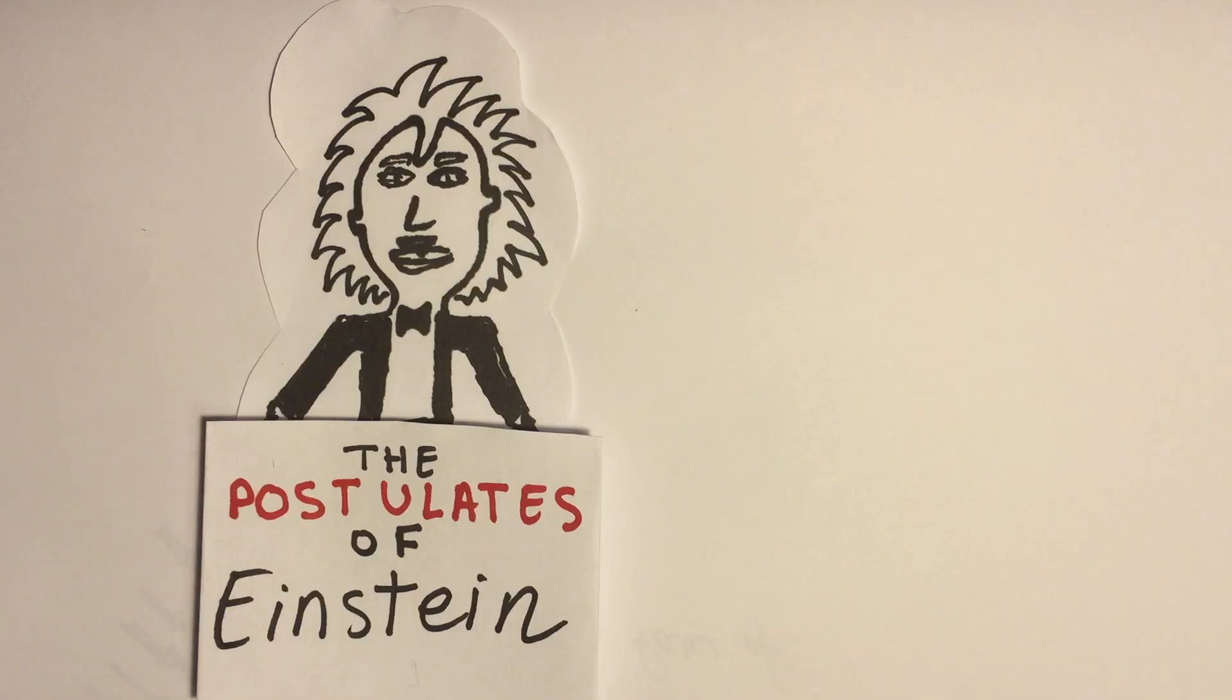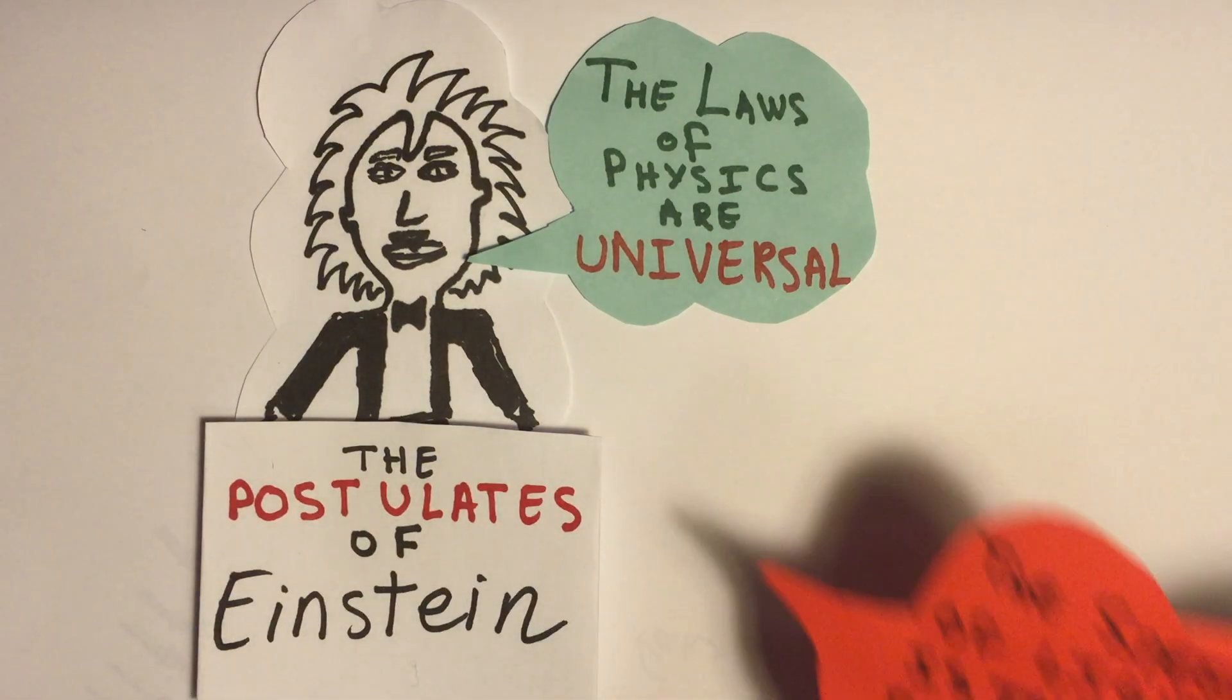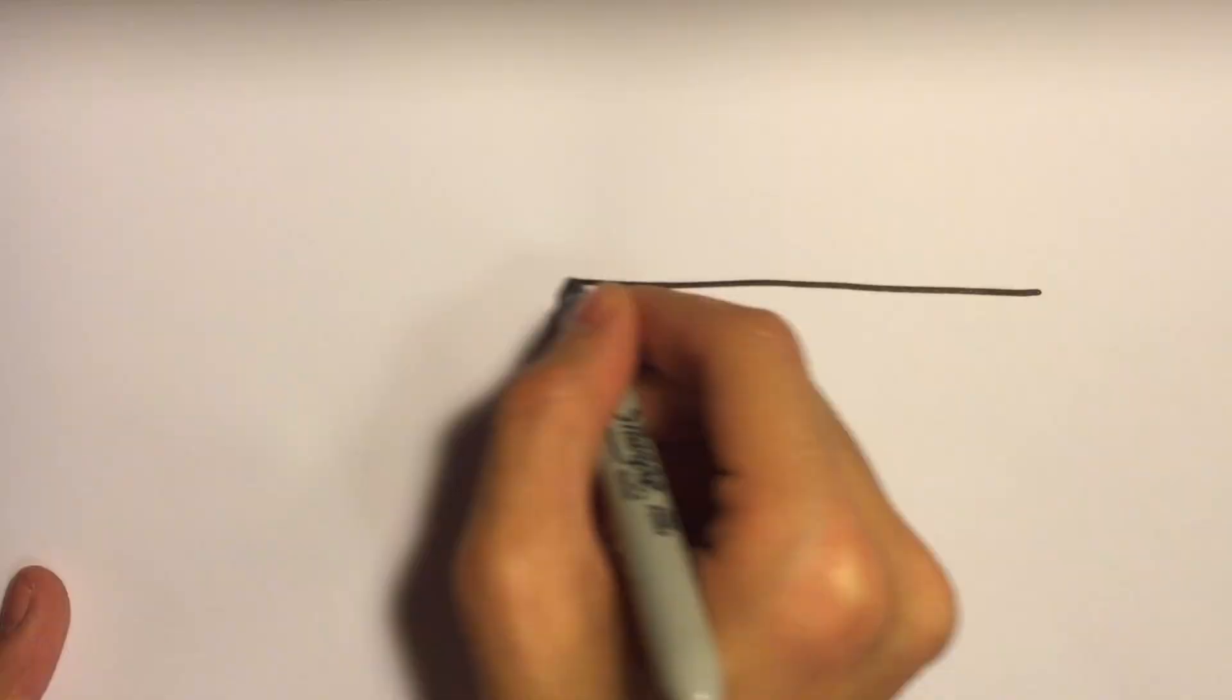In order to validate his theory, Einstein has put forward two postulates. The first is that the laws of physics are universal, and the second is that the speed of light is the same for all observers, regardless of their state of motion.